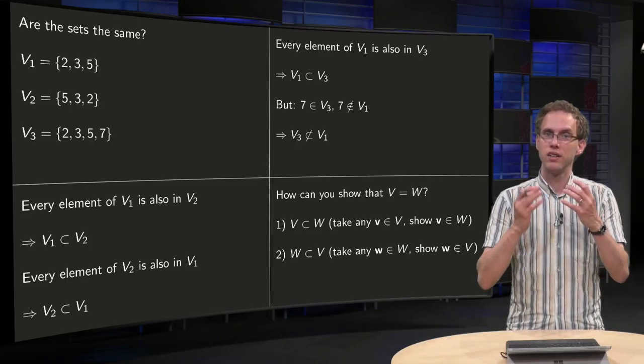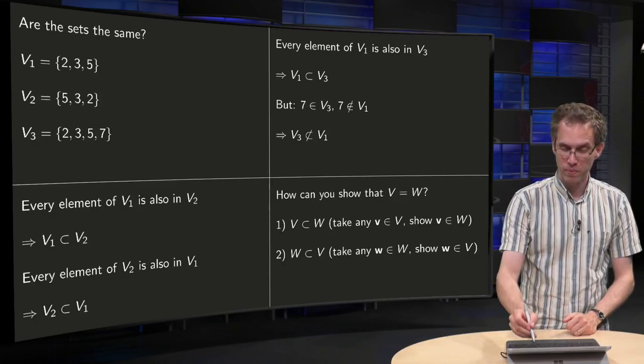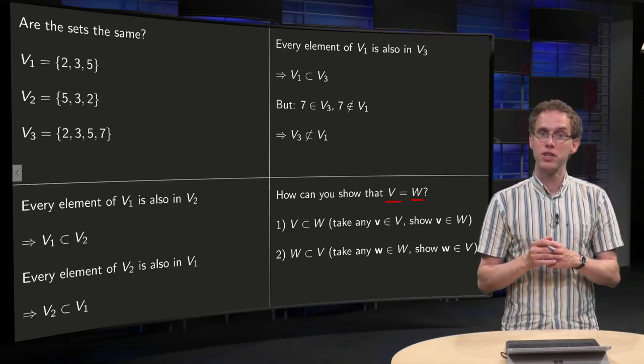So this is a criterion how you can see whether two sets are the same or not. So what do you do? Is V equal to some other set W?